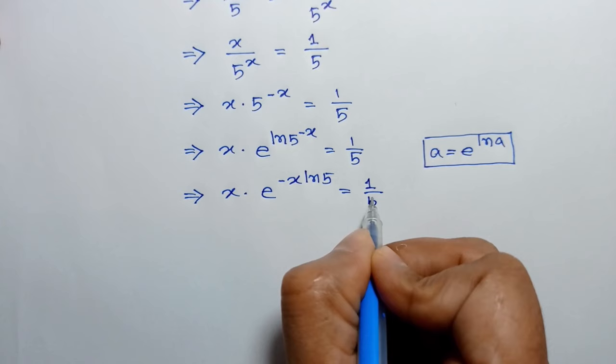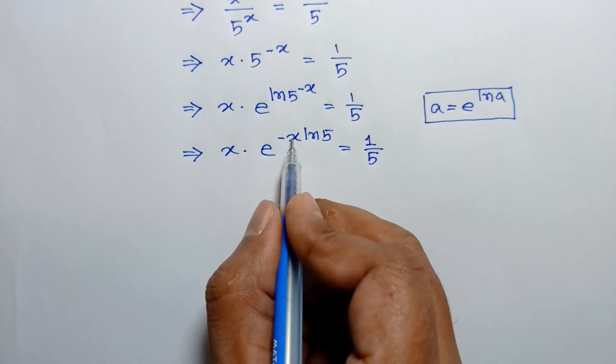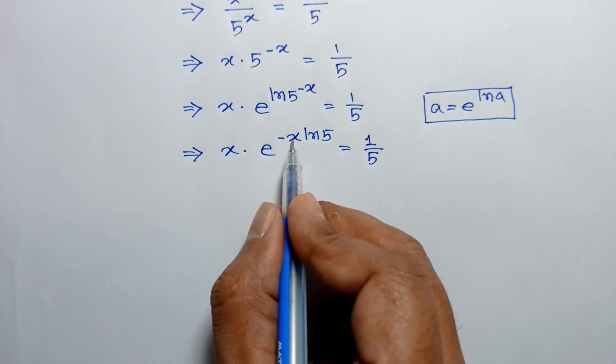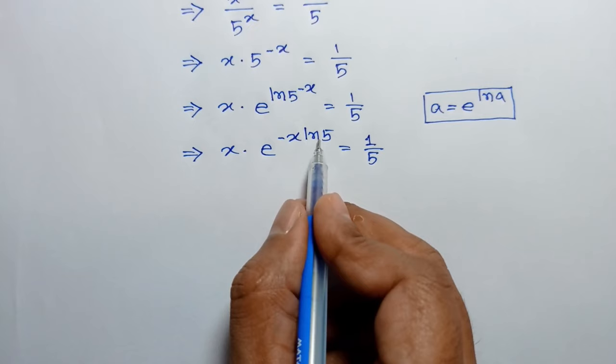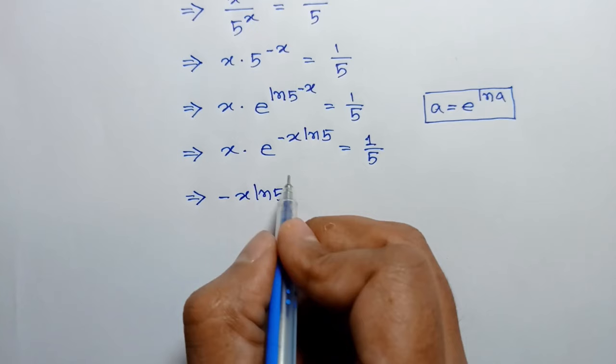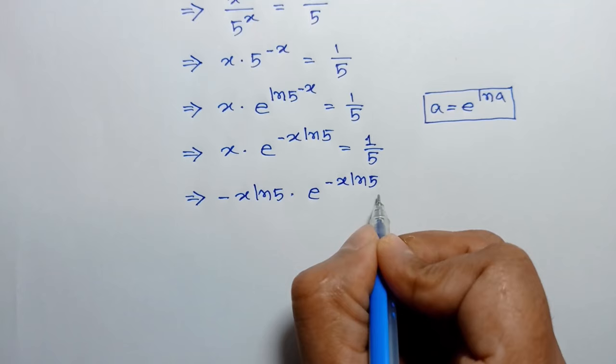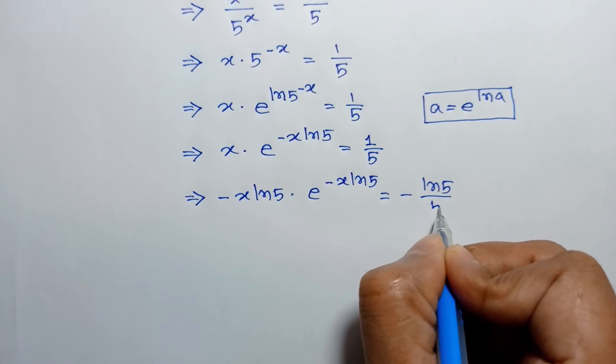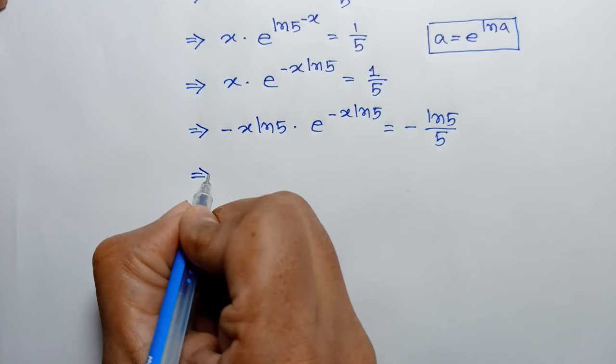The exponent of e is negative x ln of 5. To transform x into negative x ln of 5, we multiply both sides by negative ln of 5. This gives us negative x ln of 5 times e to the power negative x ln of 5 is equal to negative ln of 5 over 5.